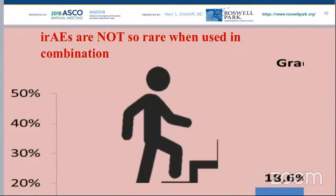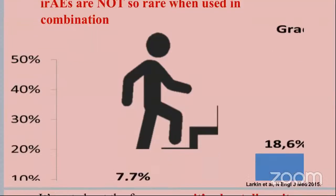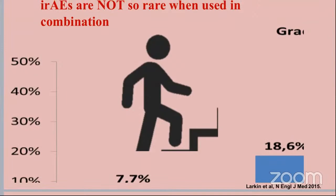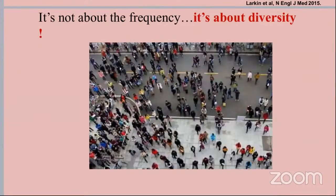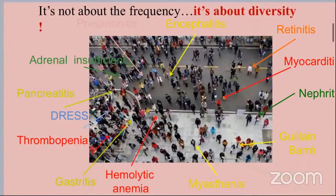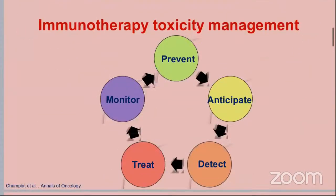Immune-related adverse events are not so rare when drugs are used in combination. The most common drugs we use are nivolumab and ipilimumab. If nivolumab is used alone, the incidence can be 7.7%; ipilimumab alone, 10.6%. If used in combination, the incidence rises to about 39%. The importance of these events is not just about frequency, but about diversity — any organ can be affected. For skin, we can see toxicities ranging from rash through more severe presentations.